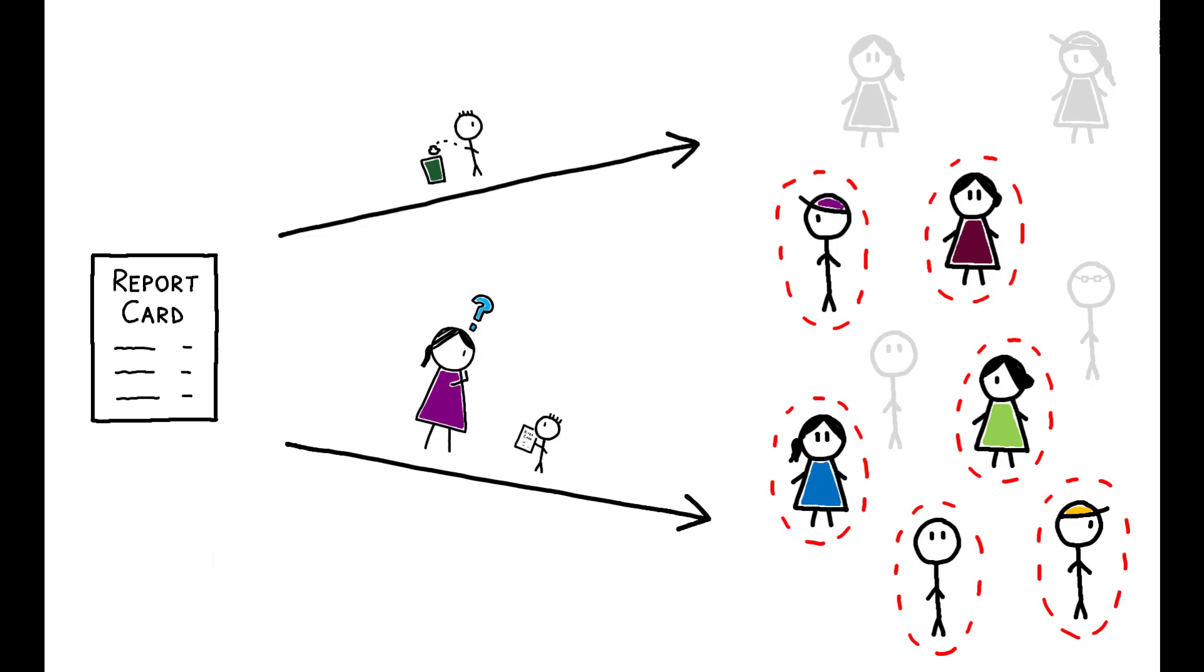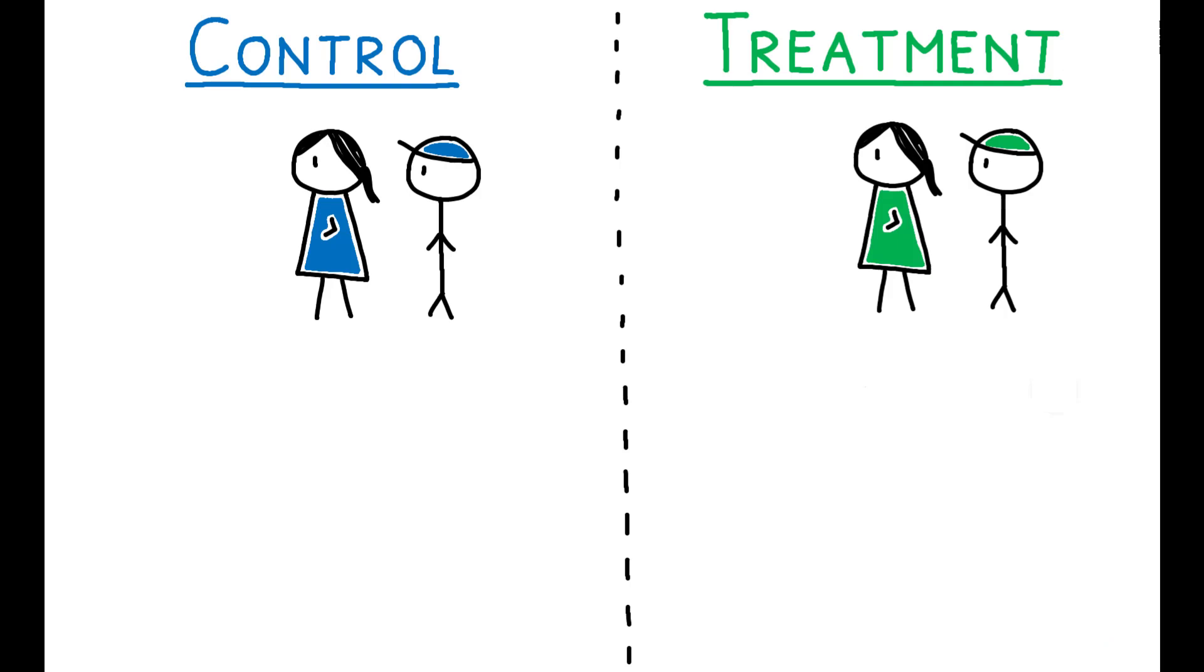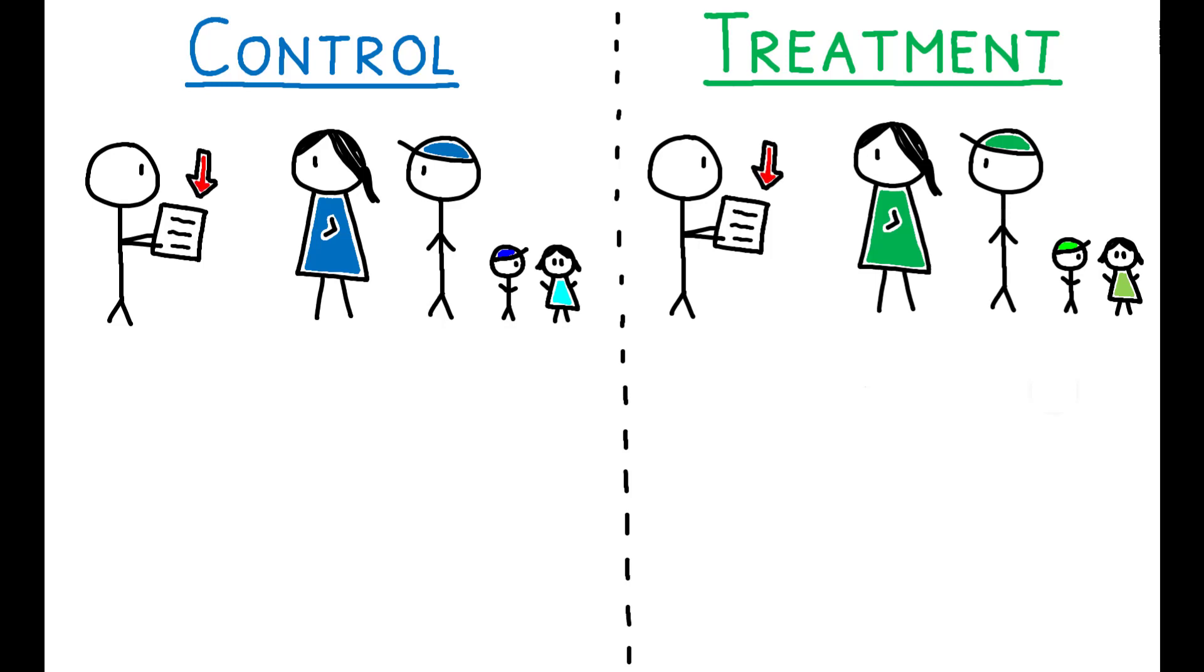This paper tests the effects of delivering and presenting this information more clearly. Over 2,600 households, each with at least two children enrolled in primary school, were visited by research staff who explained the grading system used by local schools and reviewed a sample report card.